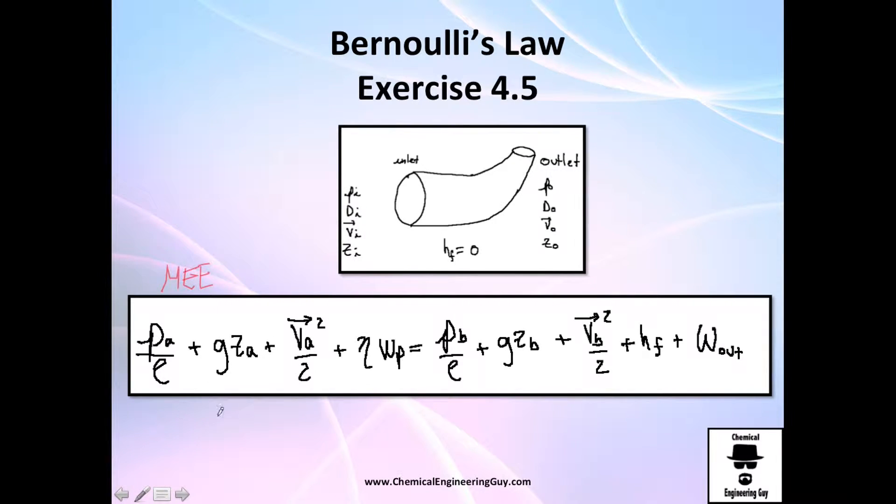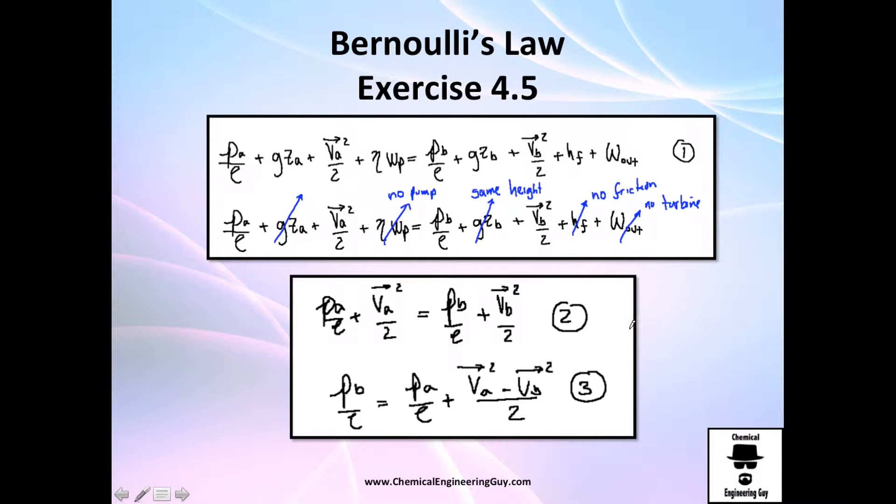Do it by yourself with all the assumptions. For example, same height: if za is five meters, zb will be five meters as well, so gravity times five on both sides will cancel. We have no pump, we have no work, and they tell us we can ignore the friction loss. So essentially, no pump, same height, no friction, and no turbine. You're left with this on the left and this on the right. This is equation number two.